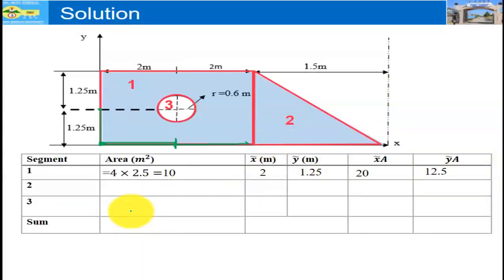Let us go to shape 2. Area of shape 2 is one-half base times height for the triangle. The base of the triangle is 1.5 and the height of the triangle is 2.5, so area is one-half base times height equals 1.875.